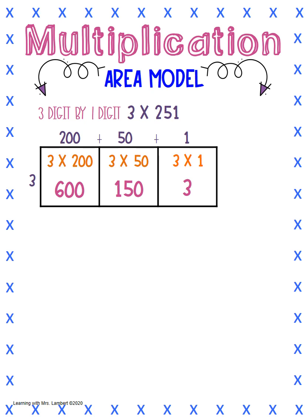Now, we're going to take all of these answers and add them up. So we have 600, we have 150, and we have three. We're going to add those together, and we get 753. So three times 251 is 753.